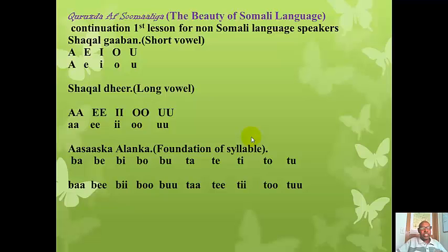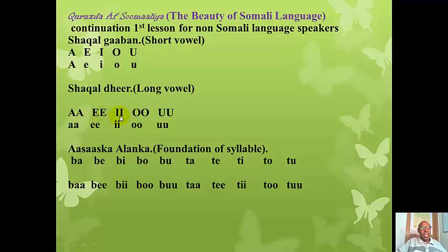As I mentioned before, in the Somali language there are ten vowels: five of them are called short vowels and five are called long vowels. The difference is just in duration — the short vowel is short and the long vowel you give it long. The short vowels sound like: a, e, i, o, u. And the long vowels: aa, ee, ii, oo, uu. Let's repeat again: a, e, i, o, u — aa, ee, ii, oo, uu.